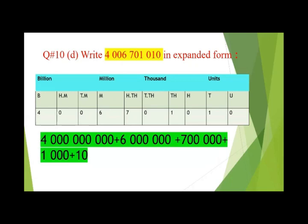Now we will solve question number ten, part D from exercise 1A: write this number in expanded form. You can read that this number is 4 billion, 6 million, 700,000, 1,000, and 10.